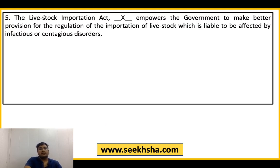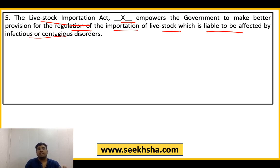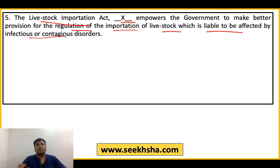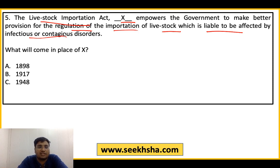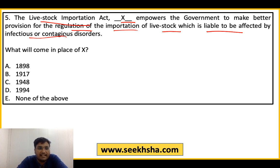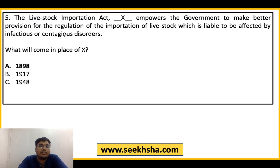Next question: Livestock Importation Act — dash — empowers the government to make better provision for the regulation of importation of livestock which is liable to be affected by infectious or contagious disorder. This act was passed in which year? Option A: 1898, B: 1917, C: 1948, D: 1994, E: None of the above. The right answer is Option A: 1898 — यह अंग्रेजों के ज़माने का act है।